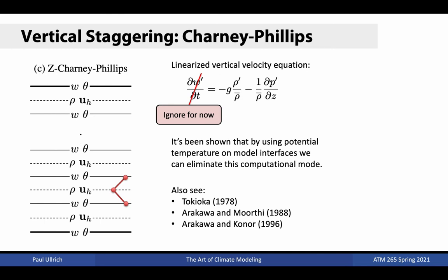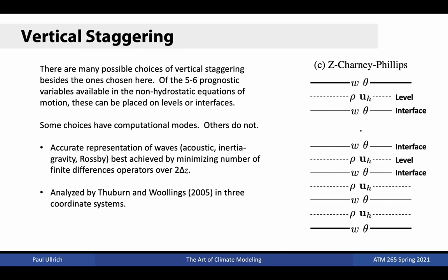The computational mode generally disappears if the secondary thermodynamic variable is placed on model interfaces — that is, the thermodynamic variables are staggered with respect to one another. This leads to the family of Charney-Phillips staggerings. The most common configuration places potential temperature on model interfaces while keeping density on model levels. It can be shown that this configuration not only removes the computational mode but also improves the quality of simulated waves. The non-hydrostatic HOMME dynamical core in E3SM uses a Lorentz staggering with a hydrostatic mass-based floating Lagrangian coordinate with W and Z on model interfaces. Accurate wave representation requires minimizing finite difference operators over 2-delta-Z, and these staggerings have been comprehensively analyzed by Thuburn and Woollings in their 2005 paper.